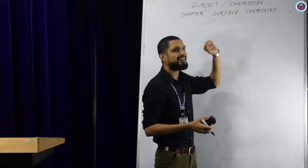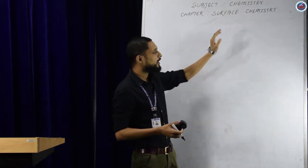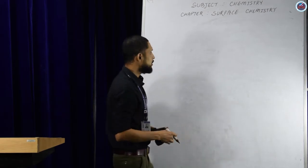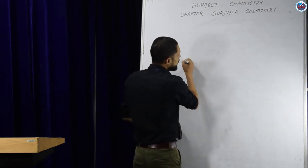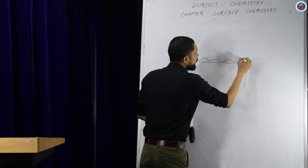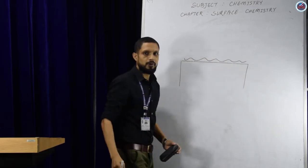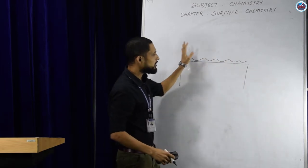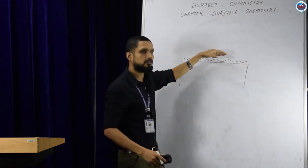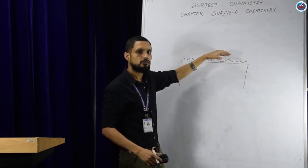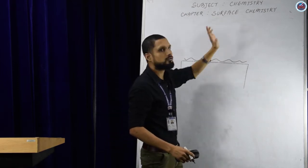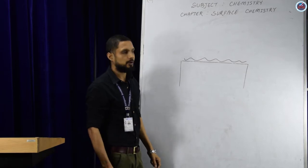What does it mean by Surface Chemistry? It is the branch of chemistry which deals with the study of surface phenomena. That means different types of phenomena take place on the surface, and the study of those phenomena is known as Surface Chemistry.